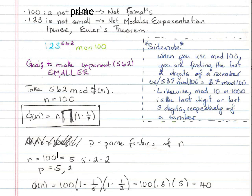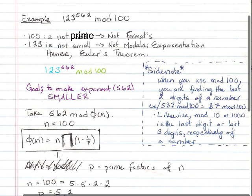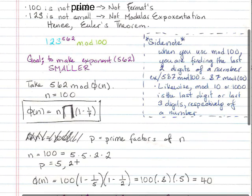So naturally, the first thing we want to do is find the prime factors of n. Remember, n was 100, our modulus, which is equal to 5 times 5 times 2 times 2. So therefore, our p's will be 5 and 2.